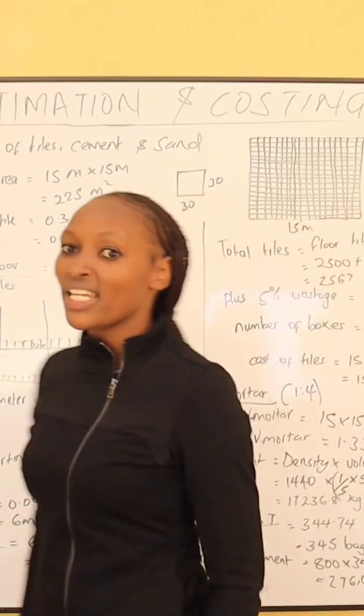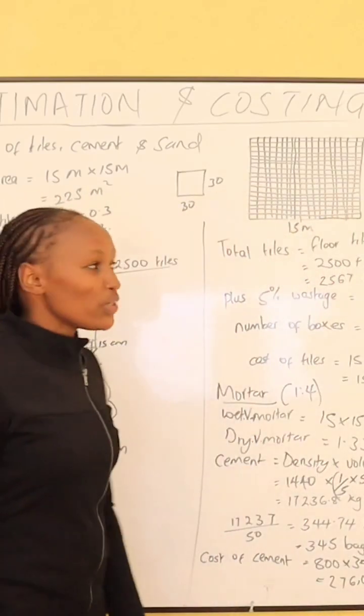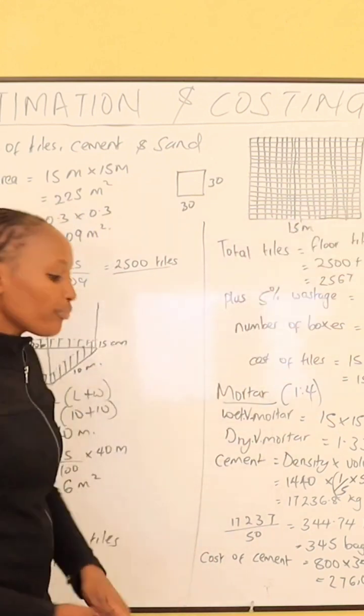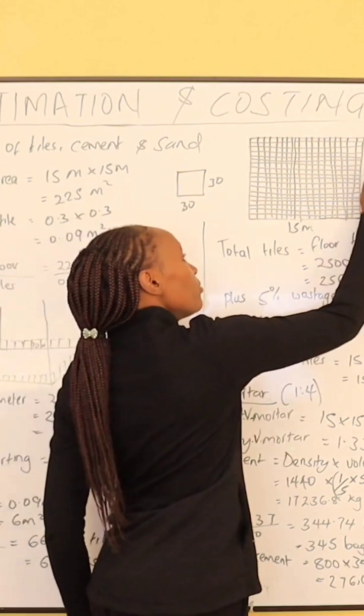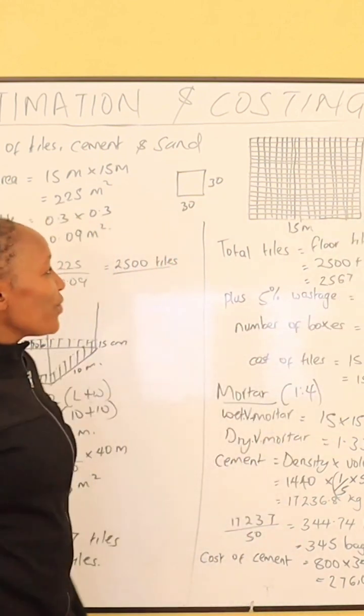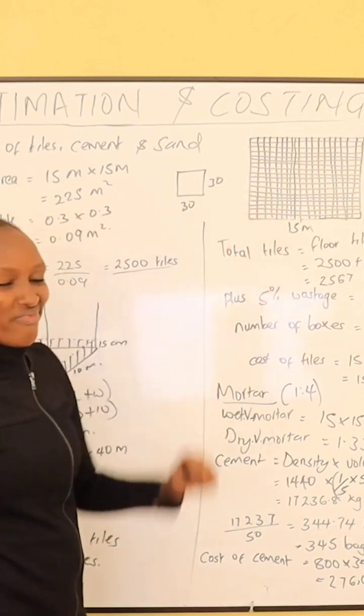The area that we shall be considering for our tiling today is an area of 15 meters by 15 meters. This room is 15 meters by 15 meters, so what is the area of this room?